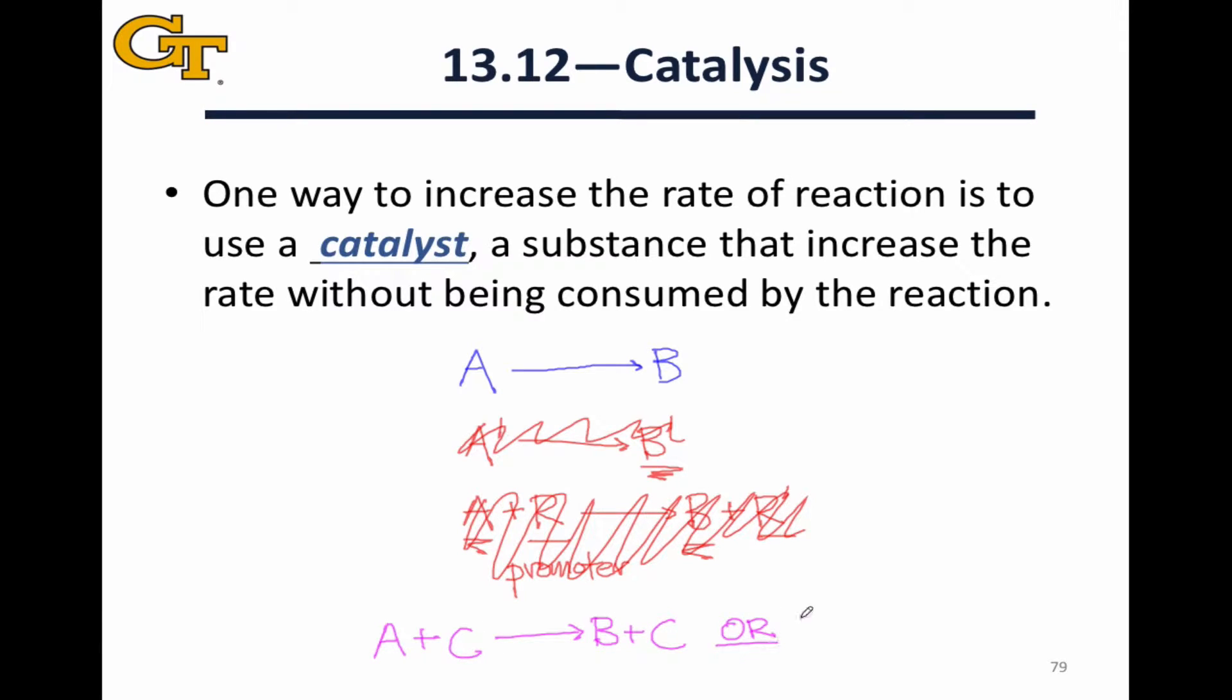So it appears both on the reactant side and on the product side, and you'll often see this written as A goes to B with the catalyst C over the line, kind of implying that this appears both on the reactants and the product side, and therefore it's a catalyst.